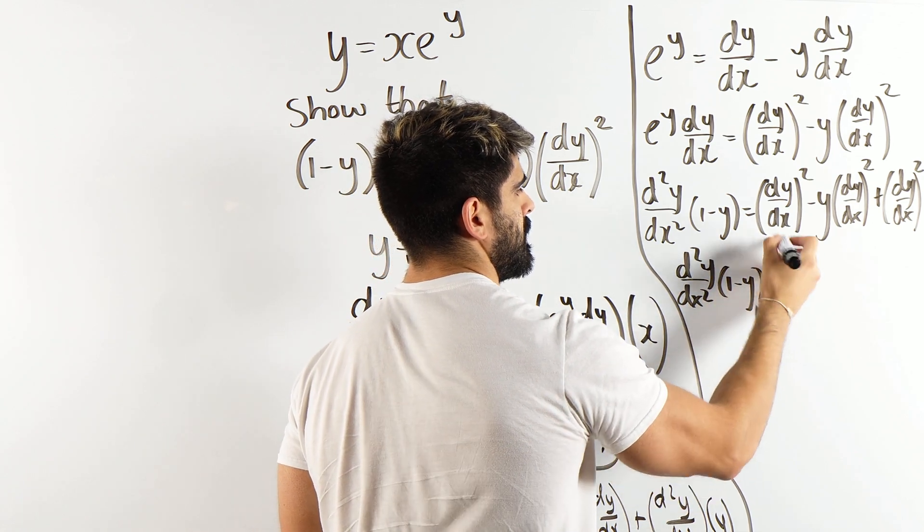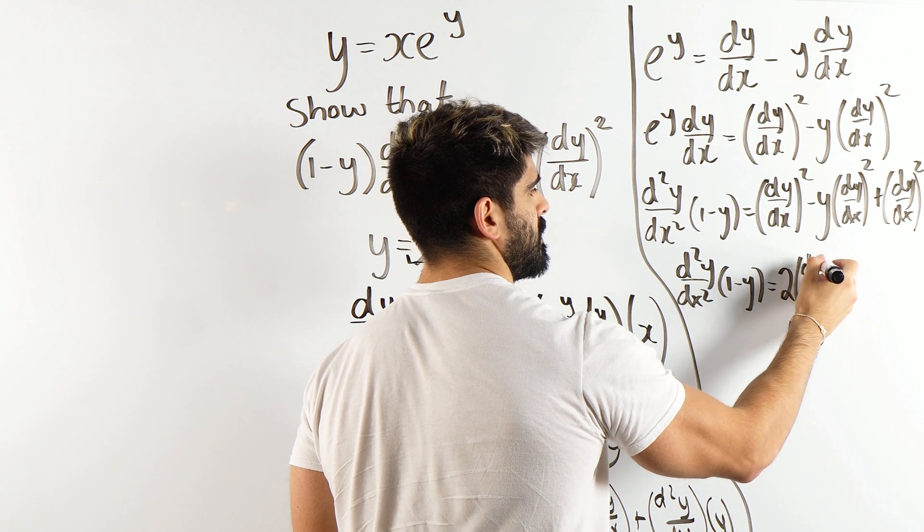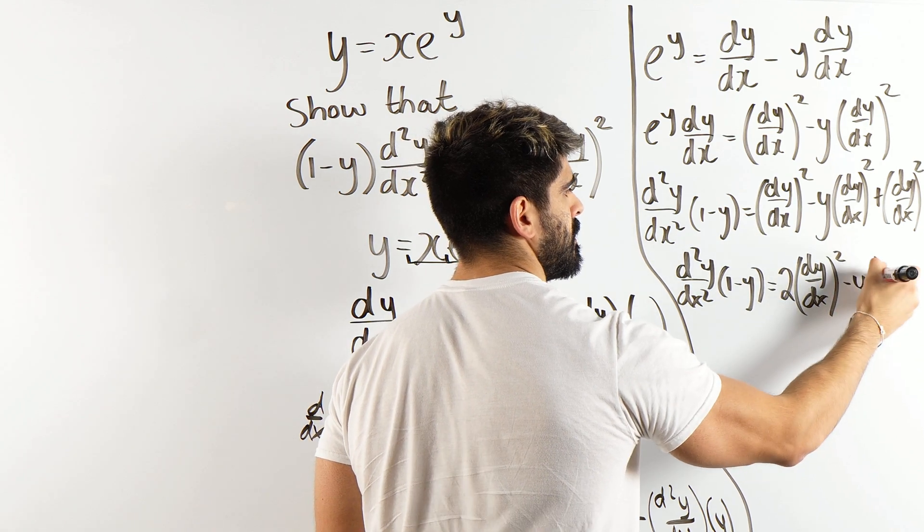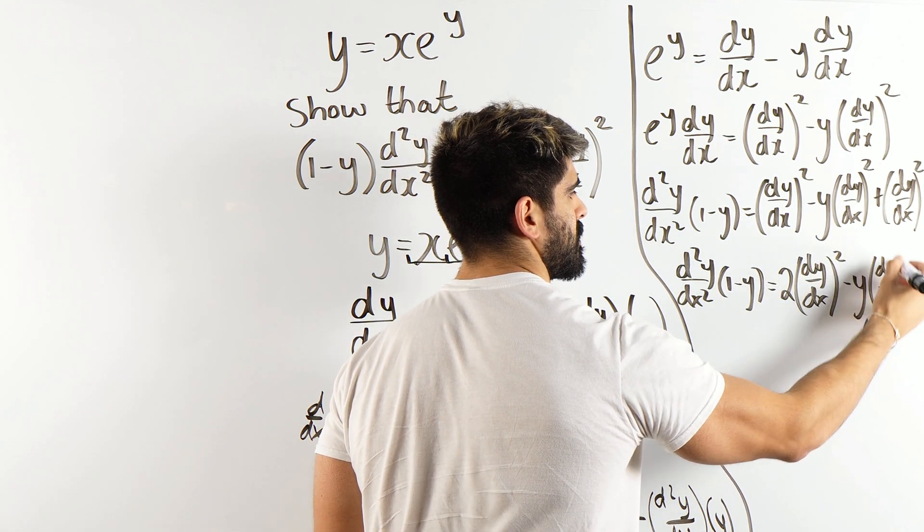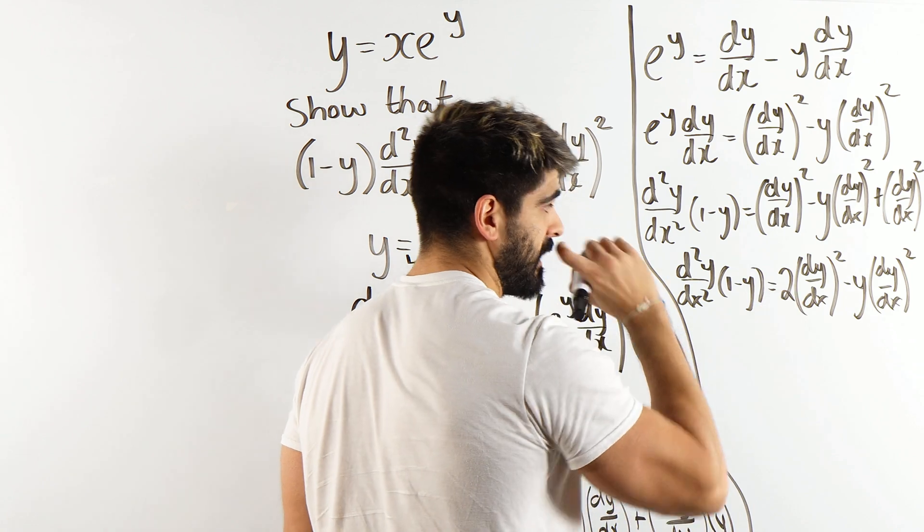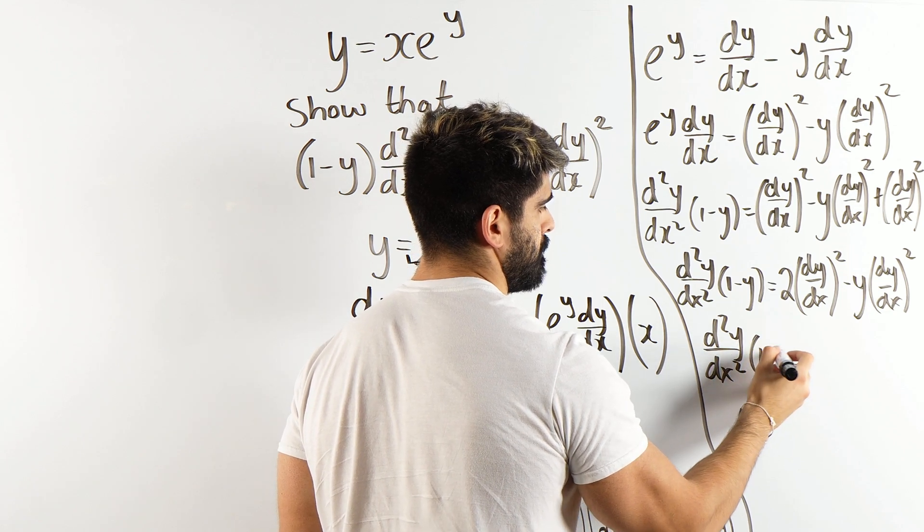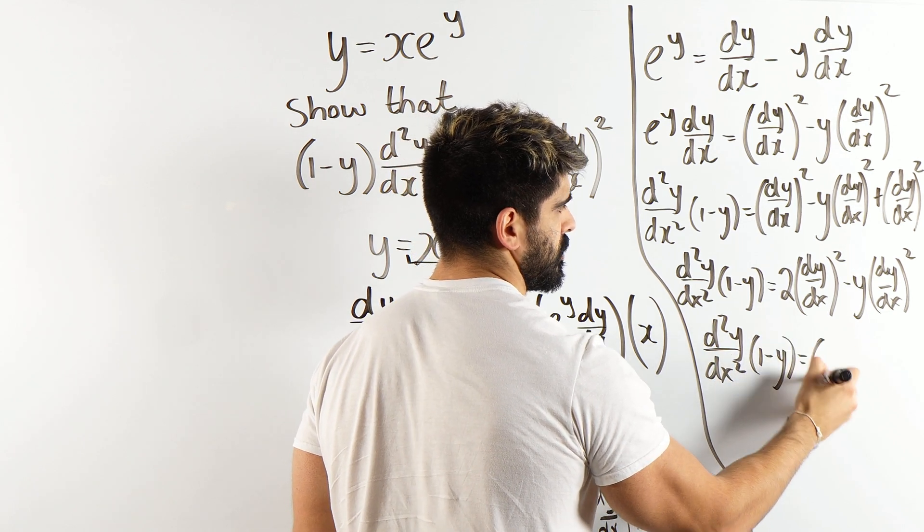So when I add them, big up Adam! 1 minus y is 2(dy/dx)² minus y(dy/dx)², which we then factorize it out, and we are left with a beautiful solution.